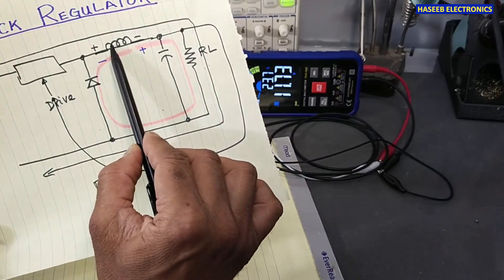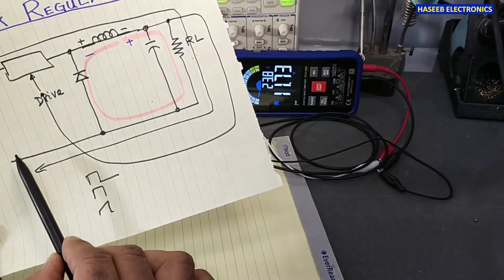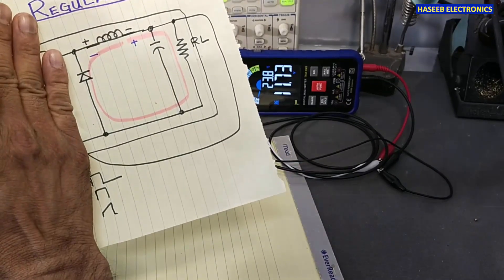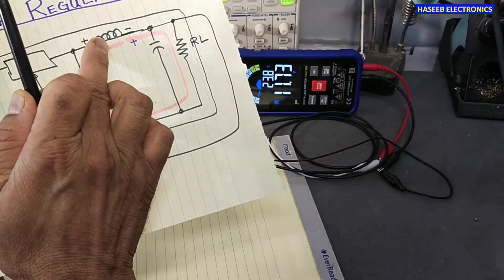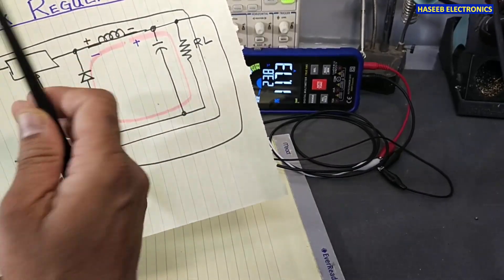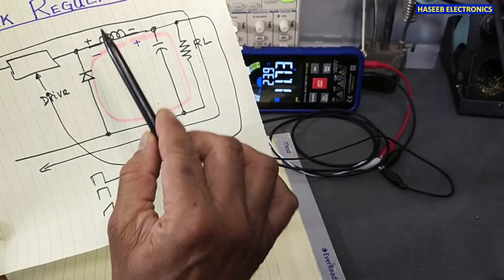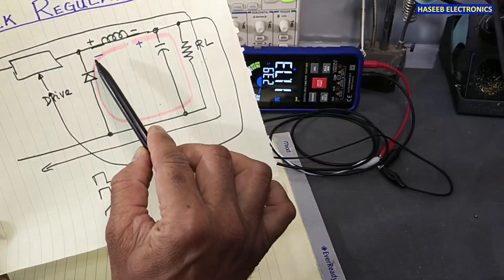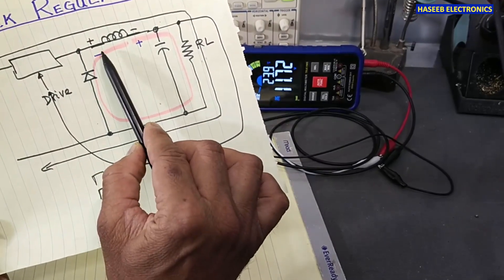When this switch is off, the stored energy in this coil, in this inductor, will collapse. The magnetic field will collapse and it will provide reverse polarity voltage to the applied voltage, so this end will become negative, this end will become positive.